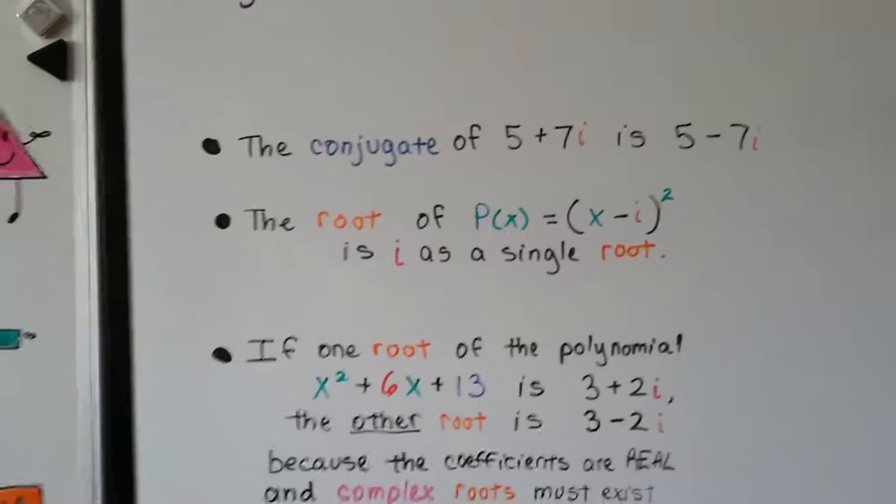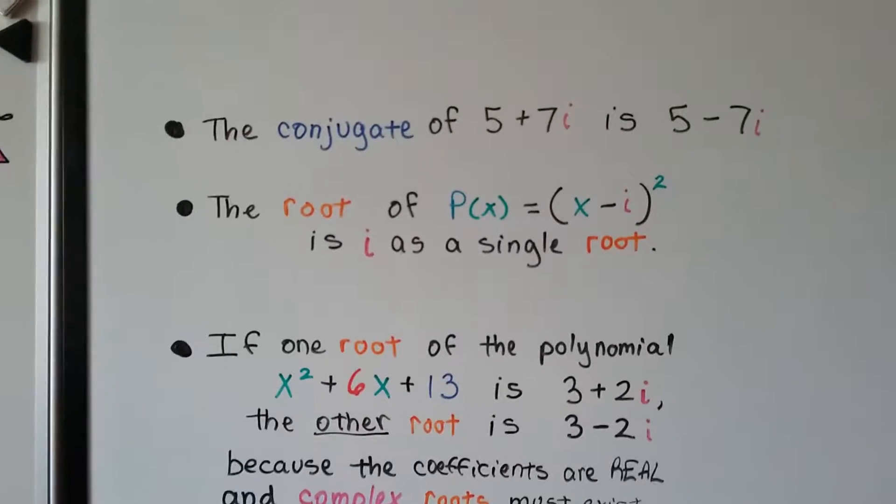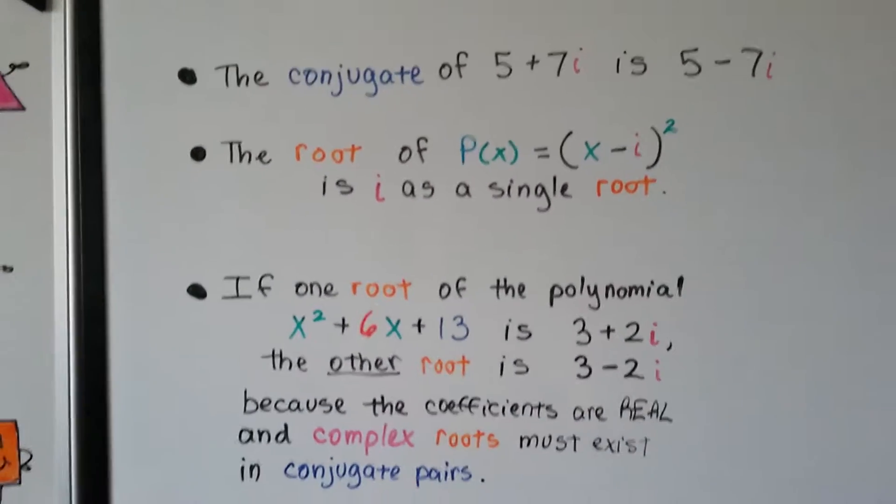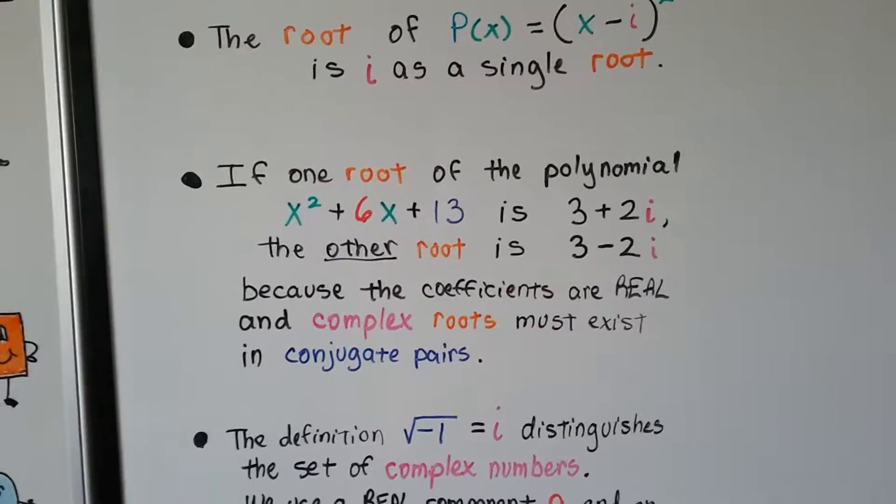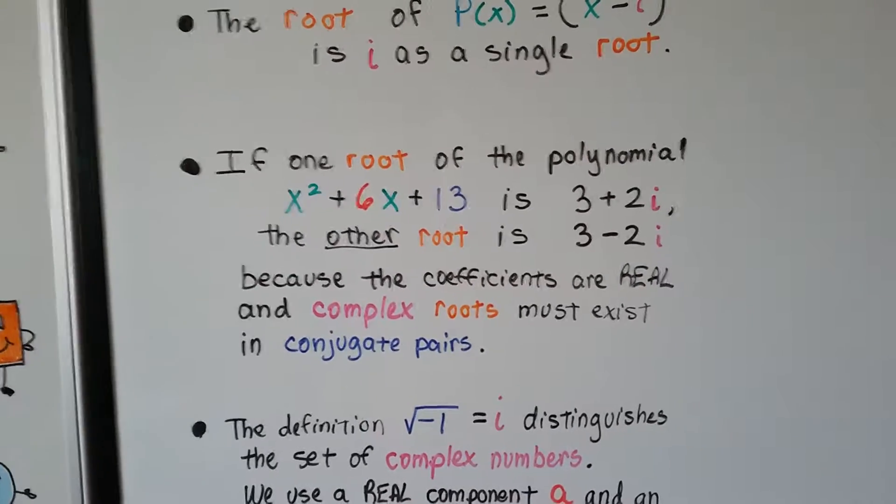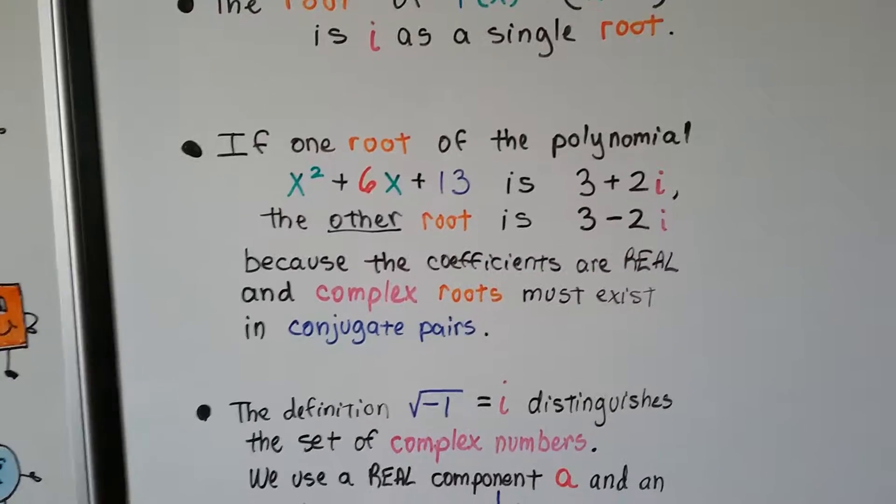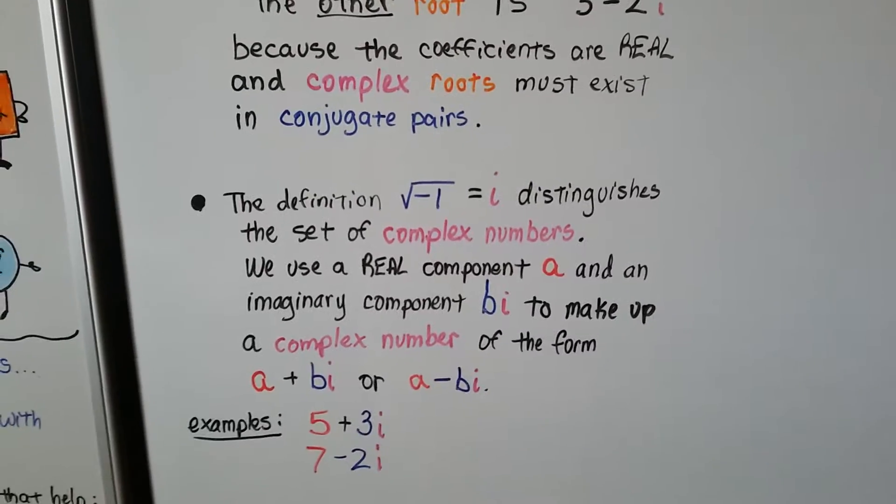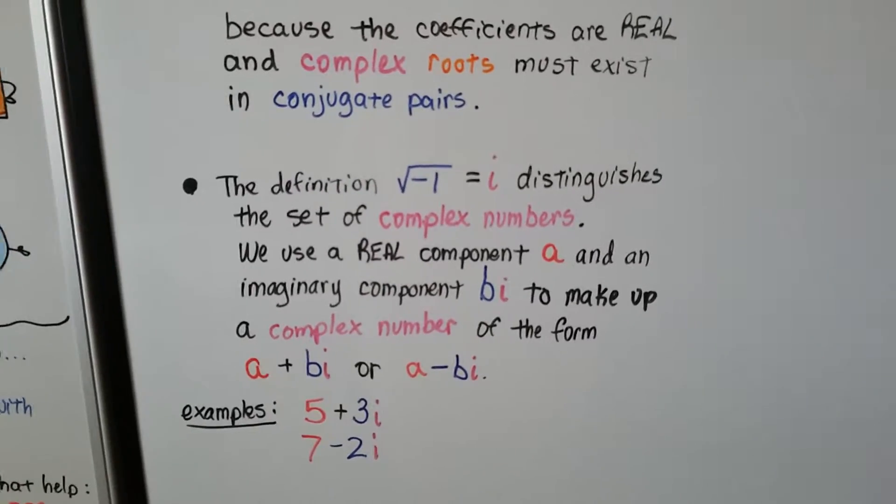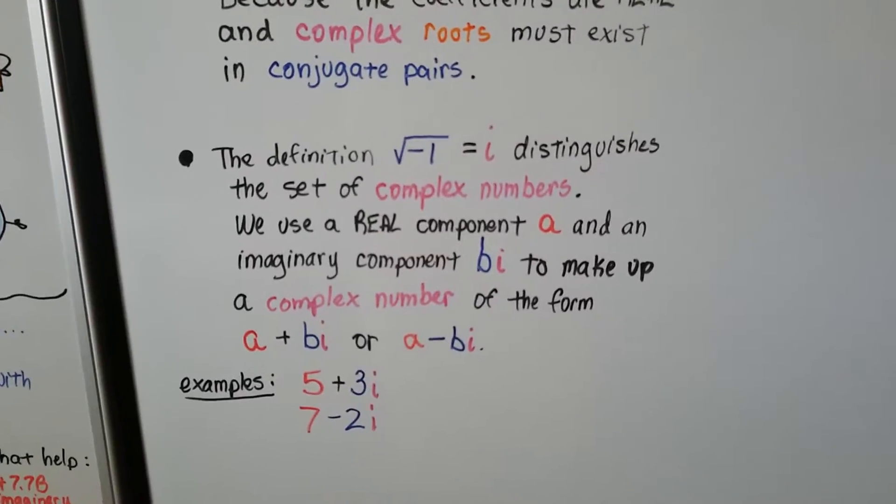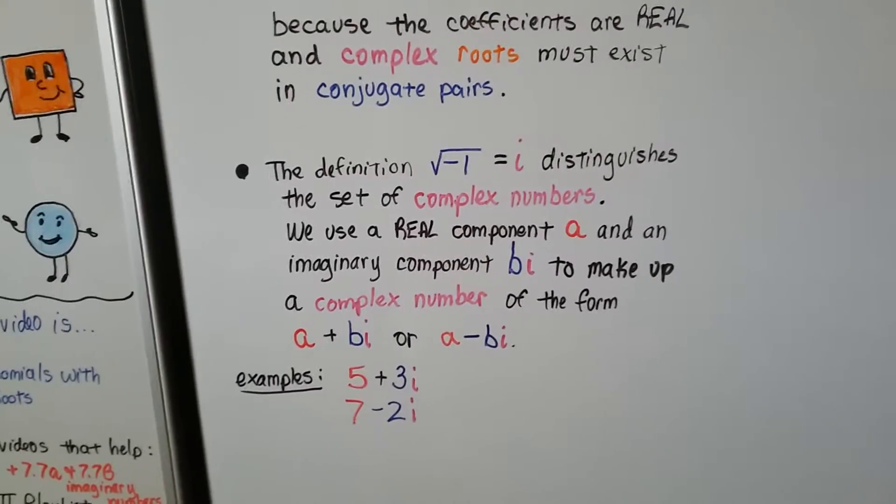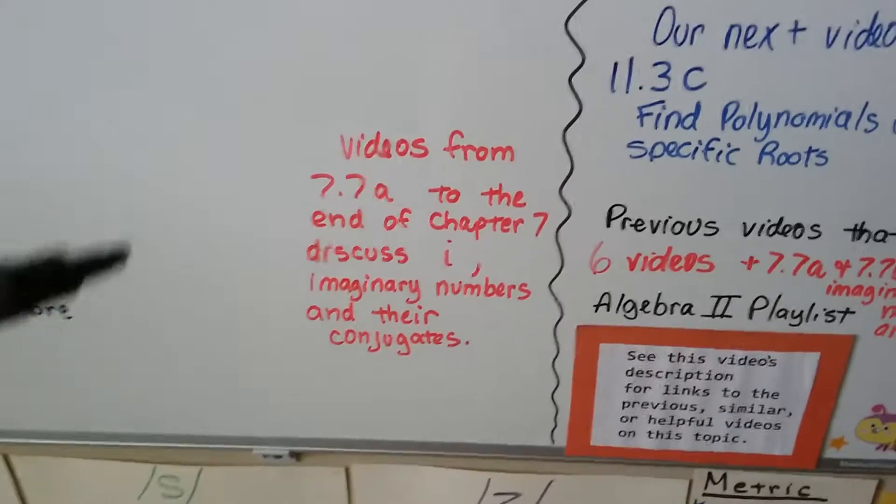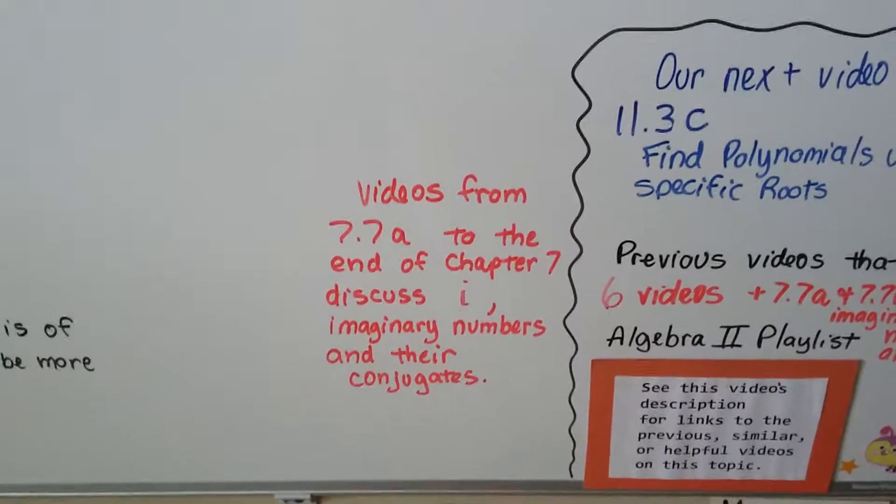Let's rehash this a little bit. The conjugate of 5 plus 7i is 5 minus 7i. The root of p of x equals the square of x minus i is i as a single root. If one root of the polynomial x squared plus 6x plus 13 is negative 3 plus 2i, then the other root is negative 3 minus 2i because the coefficients are real and complex roots must exist in conjugate pairs. The square root of negative 1 equals i distinguishes the set of complex numbers. We use real component a and an imaginary component bi to make up a complex number in the form of a plus bi or a minus bi. Examples would be like 5 plus 3i or 7 minus 2i. That was all in chapter 7. The videos from 7.7a to the end of chapter 7 discuss i, imaginary numbers, and their conjugates.